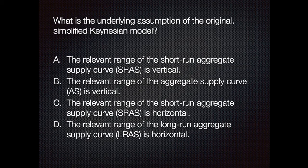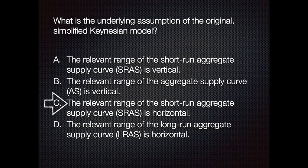What is the underlying assumption of the original simplified Keynesian model? A, the relevant range of the short-run aggregate supply curve is vertical; B, the relevant range of the aggregate supply curve is vertical; C, the relevant range of the short-run aggregate supply curve is horizontal; or D, the relevant range of the long-run aggregate supply curve is horizontal. The answer is C — the relevant range of the short-run aggregate supply curve is horizontal, because of sticky prices.